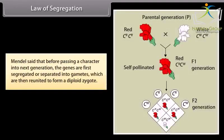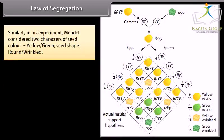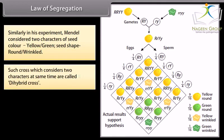Law of Segregation: Mendel said that before passing a character into the next generation, the genes are first segregated or separated into gametes, which are then reunited to form a diploid zygote. Similarly, in his experiment, Mendel considered two characters: seed color — yellow and green — and seed shape — round and wrinkled. Such a cross which considers two characters at the same time is called a dihybrid cross.